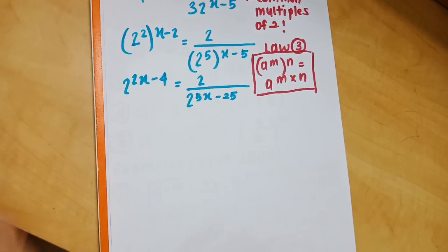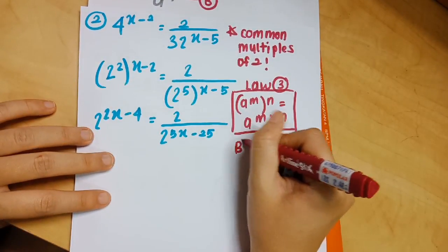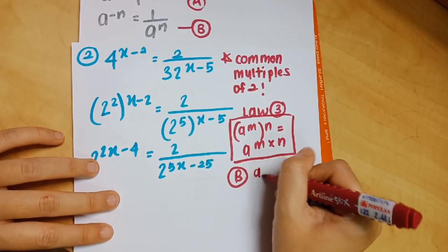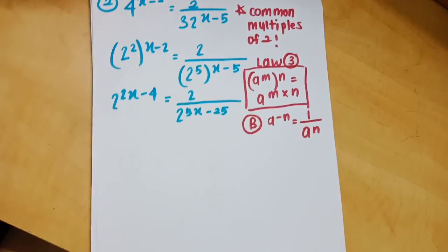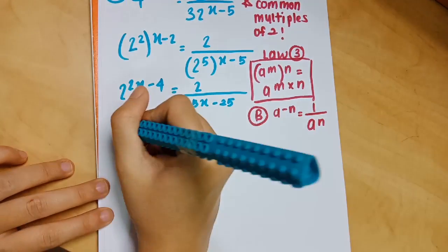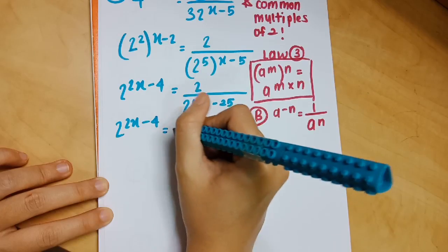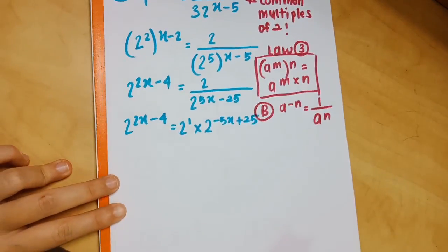The next step uses the second key concept: a^(−n) = 1/a^n. You flip the negative exponent to bring 2^(5x−25) from the denominator to the numerator, reversing its signs. So 5x becomes −5x and −25 becomes +25.